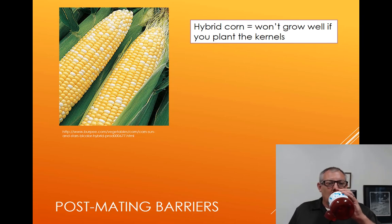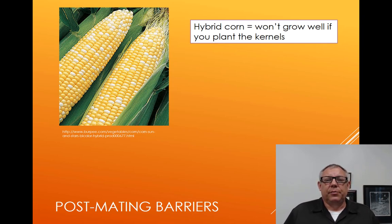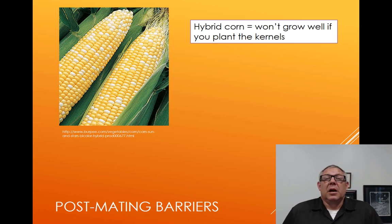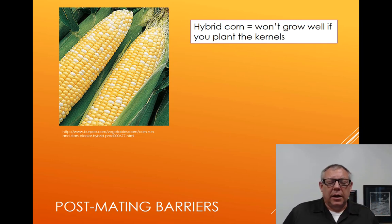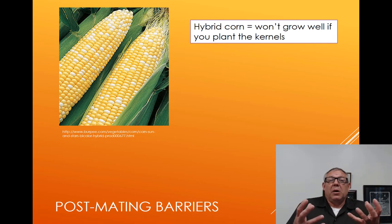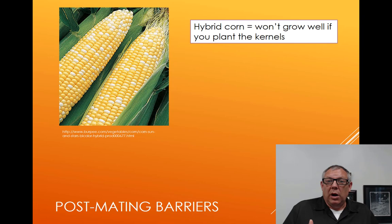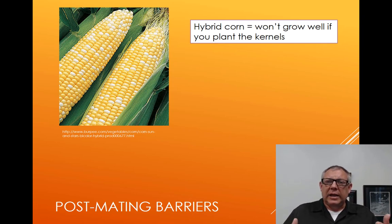Many varieties of corn and other crops are hybrids because of hybrid vigor — a mixing of alleles. The offspring grows very well and produces very big ears, which is advantageous. But if you take those corn kernels from hybrid corn and plant them, they won't grow as well as either of the parents. It's probably because of mismatches of chromosomes. You can produce a viable offspring that grows very well, but those offspring are not fertile. That's something that keeps species from interbreeding — but it's post-mating.